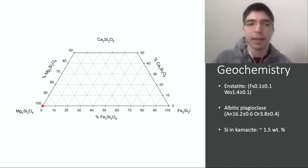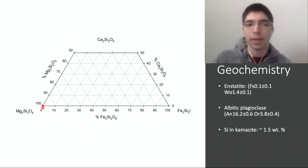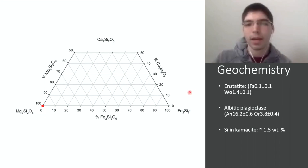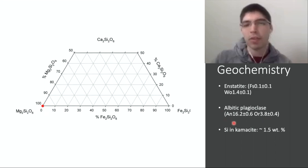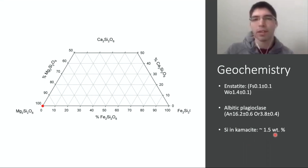In terms of geochemistry, by hitting this enstatite, it's basically pure end-member enstatite, meaning it's extremely magnesium rich. The plagioclase was albitic, mostly sodium rich with not much calcium. There is a small amount of potassium in there as well. I also managed to get some data from the kamacite or the metal, and there's about 1.5 weight percent of silicon in there.